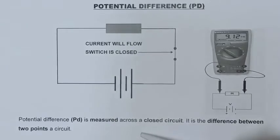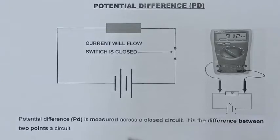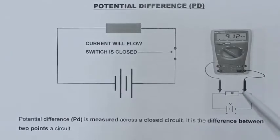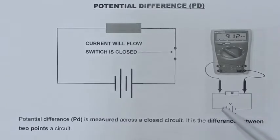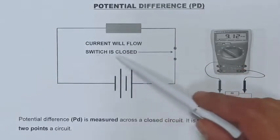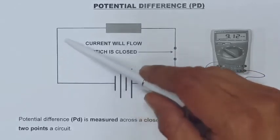Next we will have a look at what is potential difference and how it is measured in a circuit. Potential difference is measured in a closed circuit. It is also the difference between two points in the circuit, as I am illustrating here with a sketch where we have one tester lead on this side of the resistor and one tester lead on the other side of the resistor. This means I am measuring over the load when my circuit is on, with my switch closed and current flowing around in the circuit.